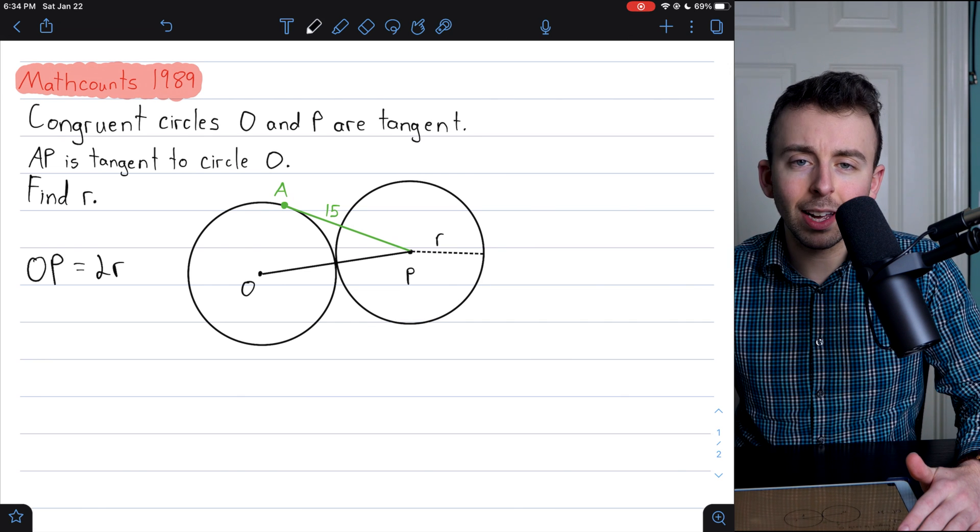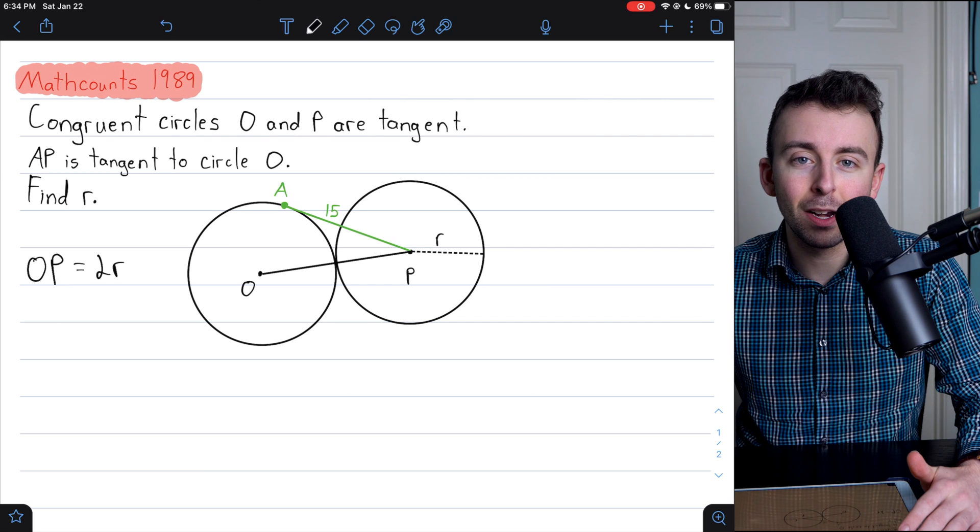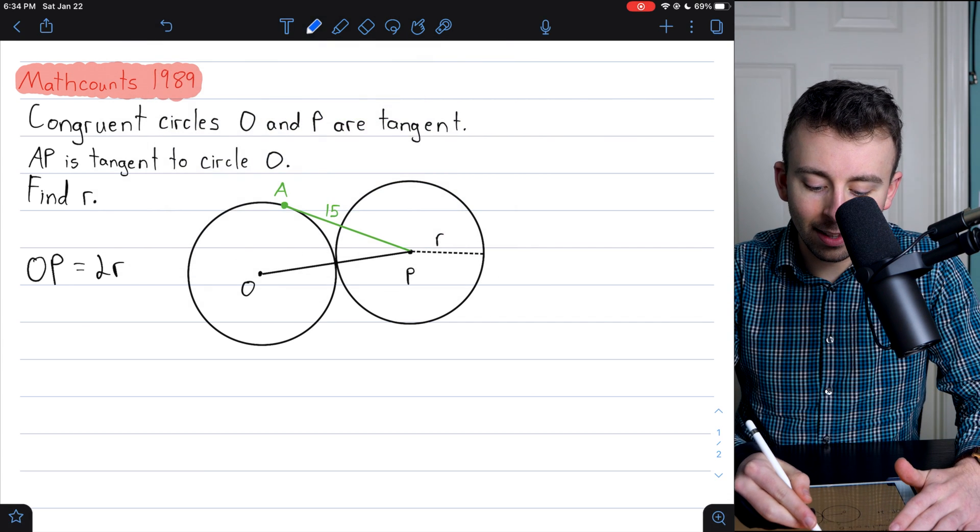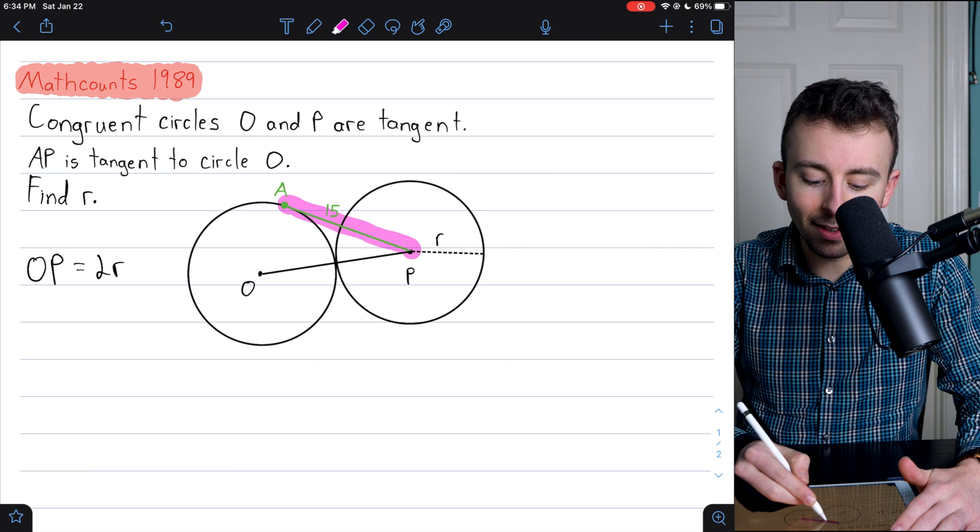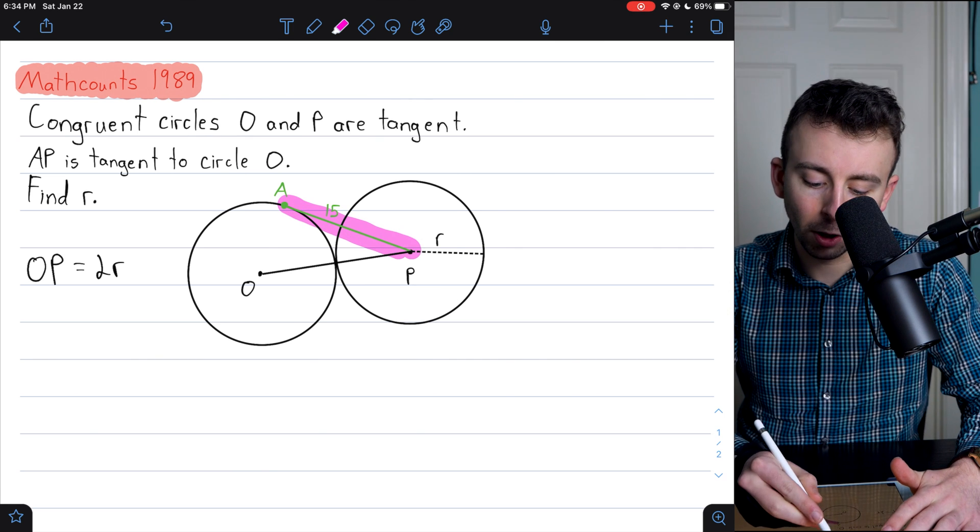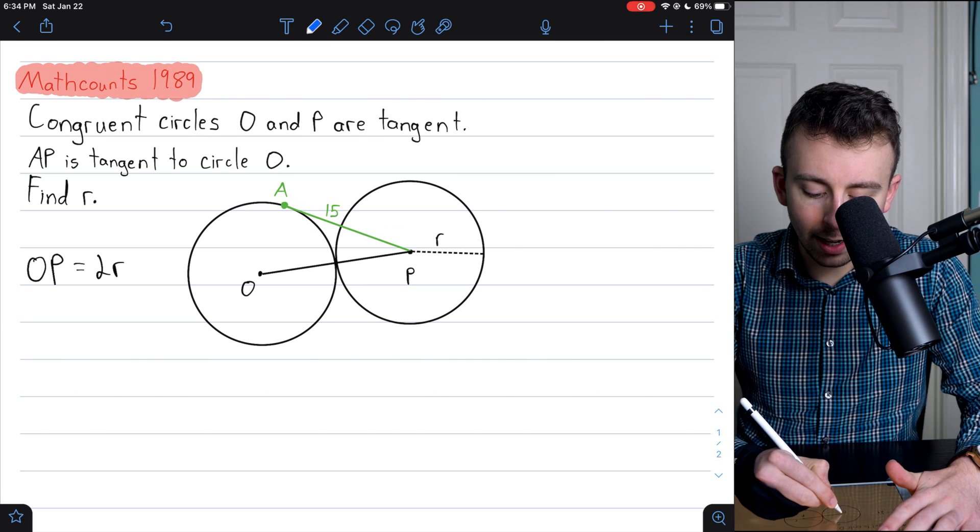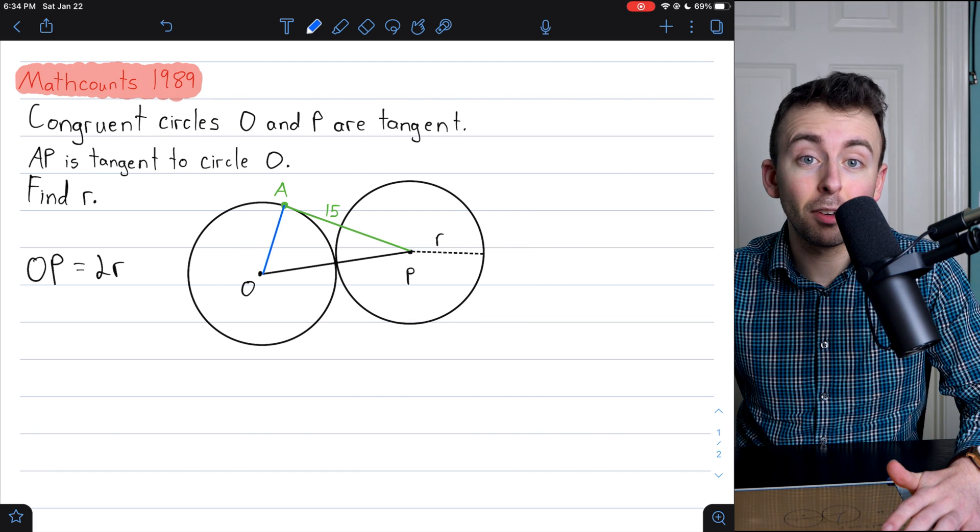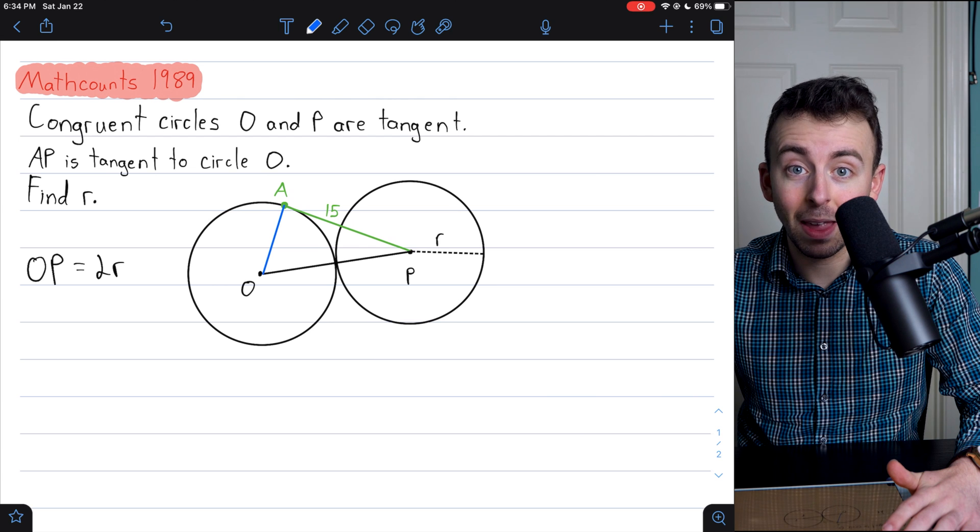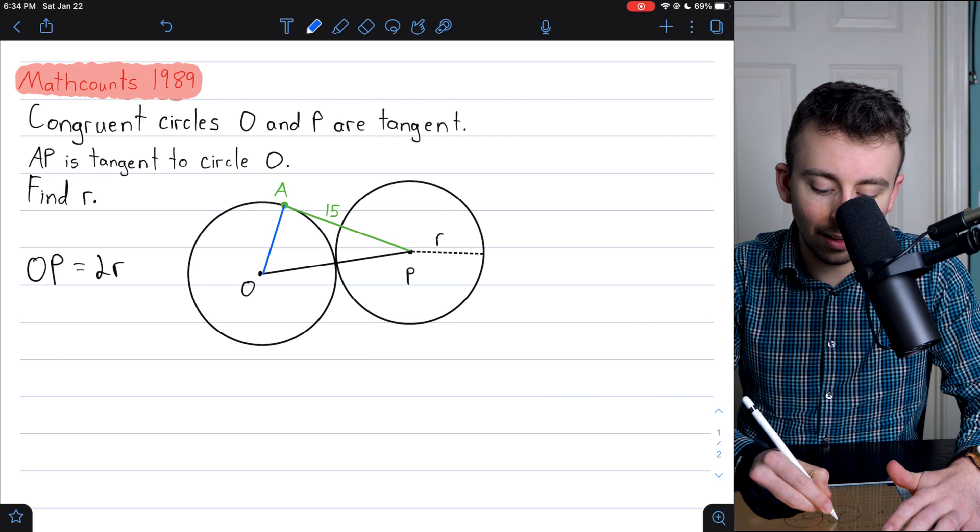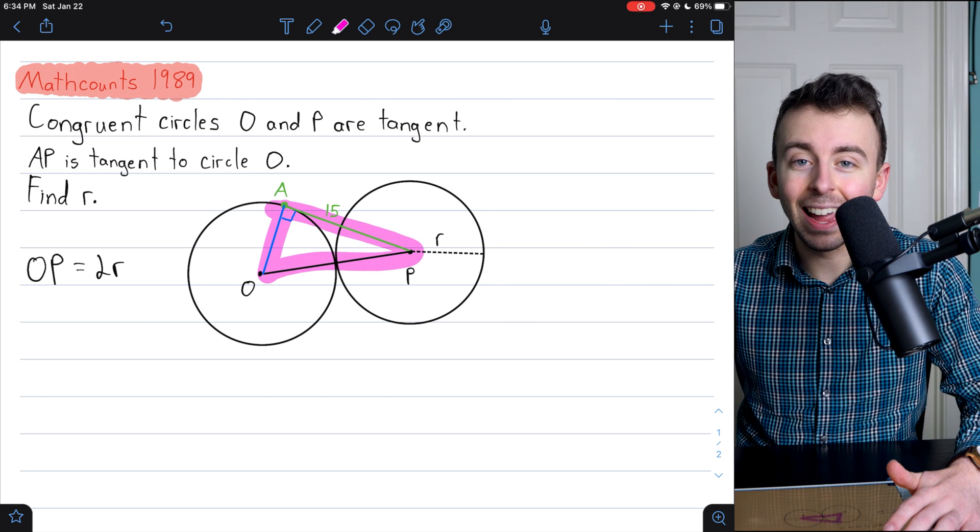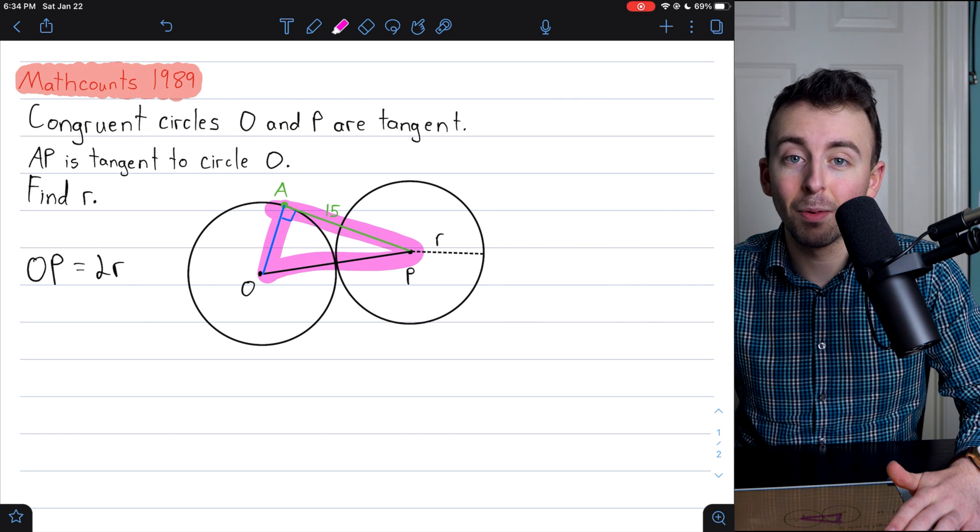The first solution I think is the easiest, and it uses the Pythagorean theorem. It goes a little something like this. Since this AP segment is tangent to circle O, if we draw a radius from O to A, necessarily that radius has to be perpendicular to the tangent at that point of tangency. And so what we've got here is a right triangle.